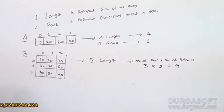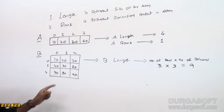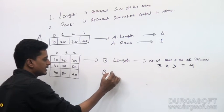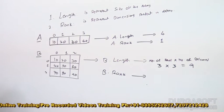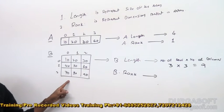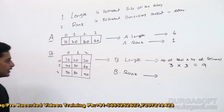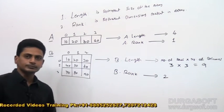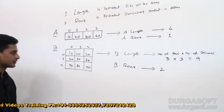For B.Rank, rank represents the dimensions present in the array. This is a two-dimensional array — rows are one dimension and columns are another. So B.Rank is 2. Always, a two-dimensional array has rank 2, and its length is number of rows multiplied by number of columns.